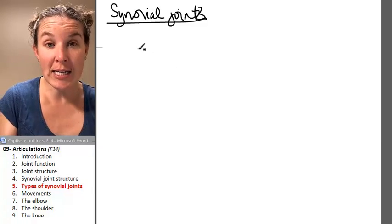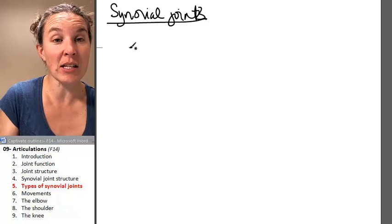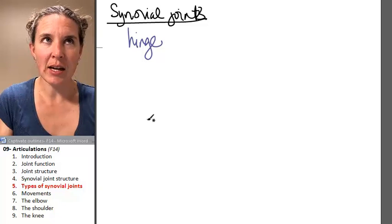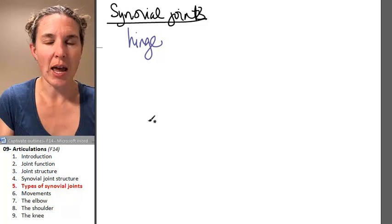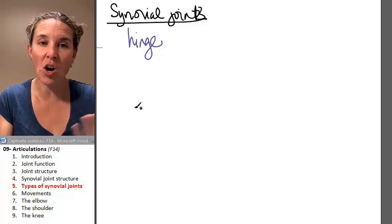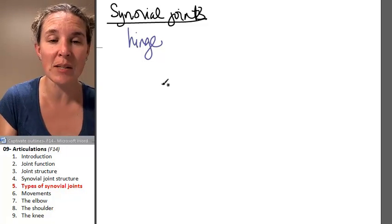So one type of synovial joint that we have is the hinge joint. The hinge operates like a door hinge and it allows movement in one plane. It's called a uniaxial joint because of that.